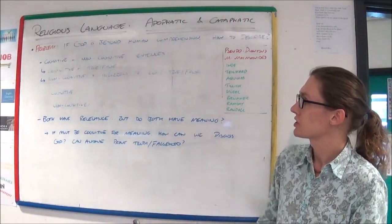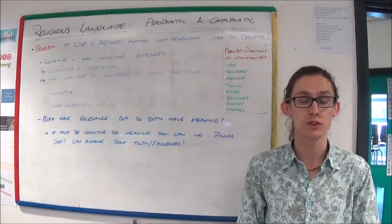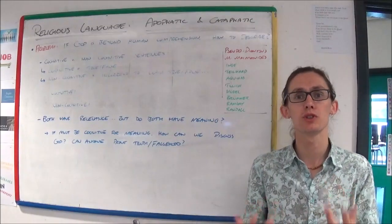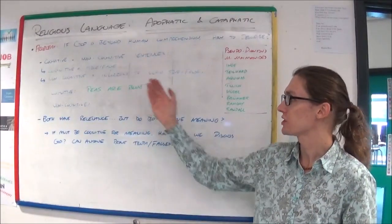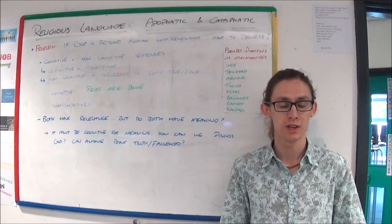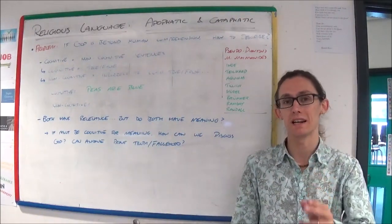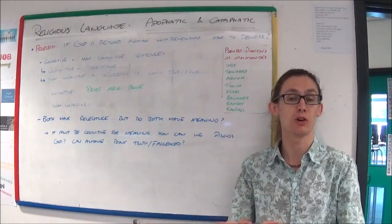A cognitive sentence is one that can be considered true or false. A non-cognitive sentence is one that could not be described accurately as true or false. So an example of a cognitive sentence would be peas are blue. Now it's not true, it's false. But the fact that we can determine whether it's true or false makes it a cognitive sentence.